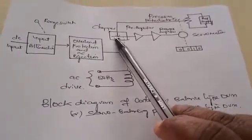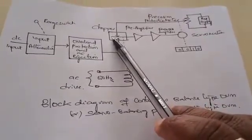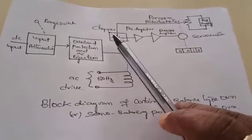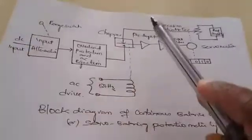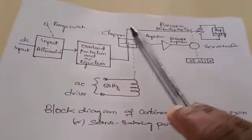It mainly consists of a chopper, which is generally called a mechanical chopper. To this mechanical chopper we are giving two inputs: one is the DC input which has to be measured, and the other is the reference voltage which is coming through the potentiometer.